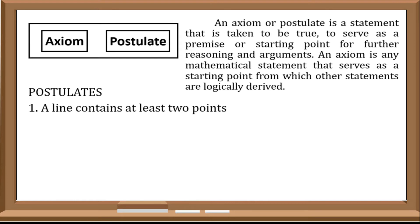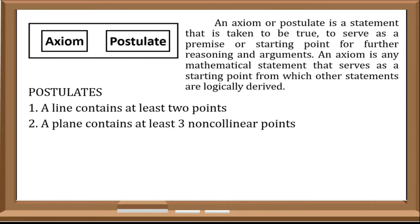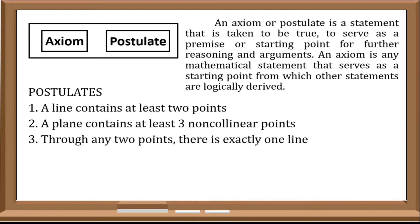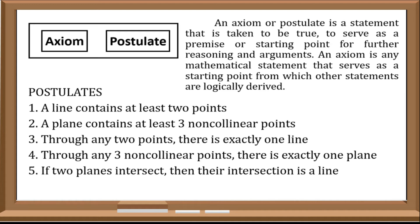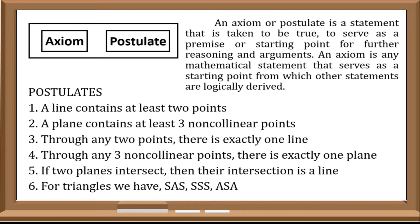First, a line contains at least two points. Second, a plane contains at least three non-collinear points. Third, through any two points there is exactly one line. Fourth, through any three non-collinear points there is exactly one plane. Fifth, if two planes intersect, then their intersection is a line. And last, for triangles we have: the Side-Angle-Side congruence postulate, or SAS; the Side-Side-Side congruence postulate, or SSS; and the Angle-Side-Angle congruence postulate, or ASA.